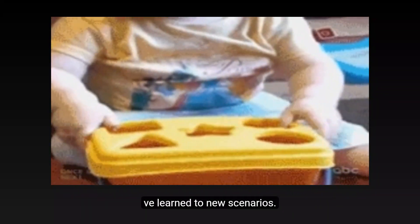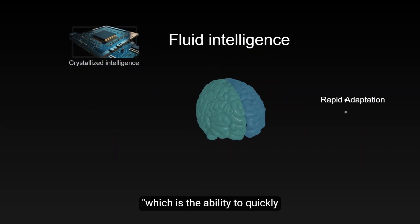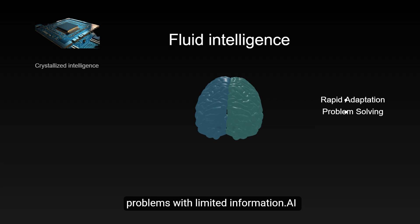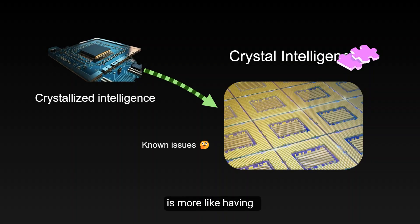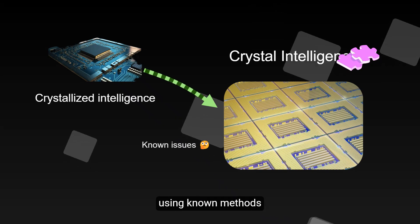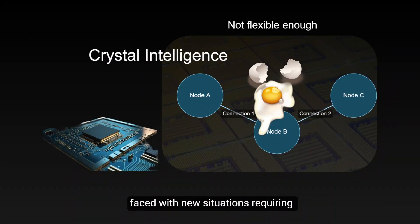The advantage of humans lies in fluid intelligence, which is the ability to quickly adapt to new situations and solve problems with limited information. AI, on the other hand, is more like having crystallized intelligence, excelling at solving problems using known methods. But it appears less flexible when faced with new situations requiring innovative thinking.